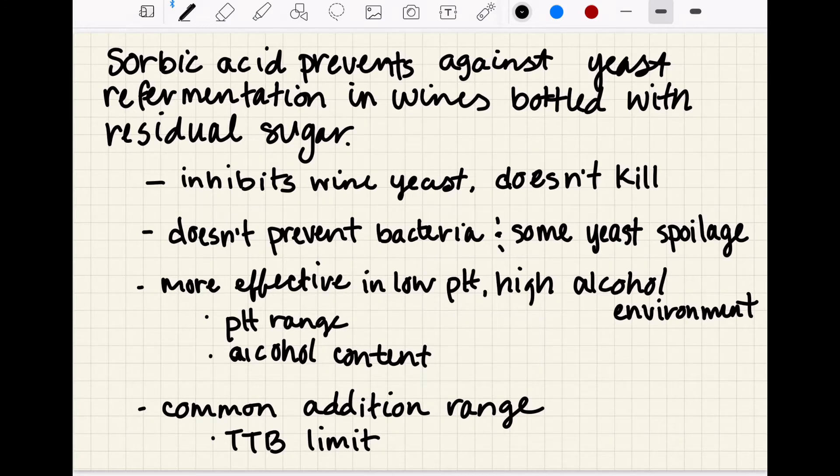And some other key points about sorbic acid is that it's more effective in a low pH and higher alcohol environment, and that pH range is 3.0 to 3.7 and that alcohol content is anything greater than or equal to 10%. So if you had a wine with alcohol below 10% and a pH above 3.8, it would be really difficult for the sorbic acid to help prevent refermentation just due to the environment in the wine.